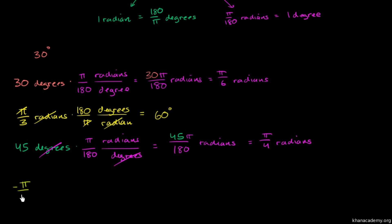Negative π over 2 radians. Converting to degrees: negative 90 degrees. Negative 90 degrees with a negative sign. Converting degrees to radians: π radians, degrees.